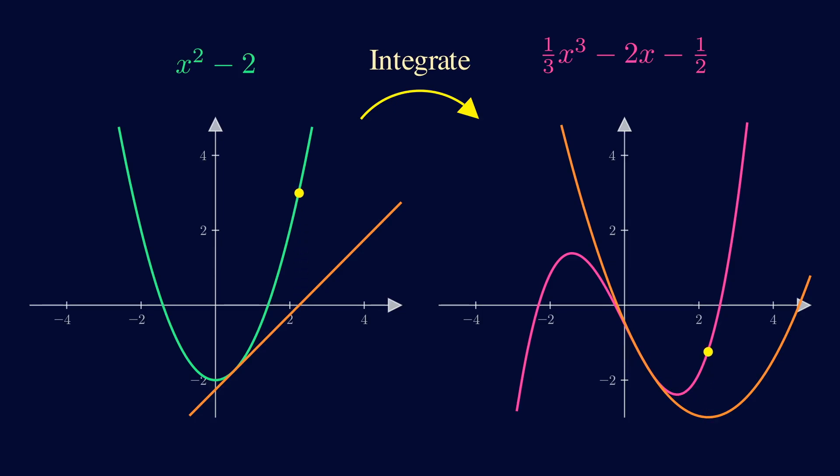So we can think of Newton's method as an optimization algorithm that tries to find a function's critical points by continually taking a quadratic Taylor polynomial, optimizing that, and then repeating until we converge.